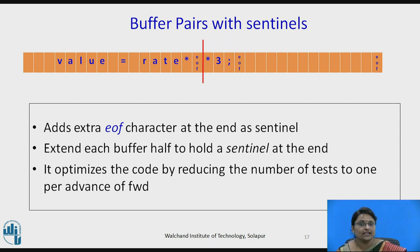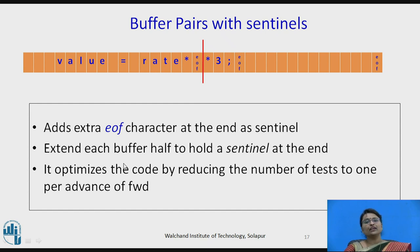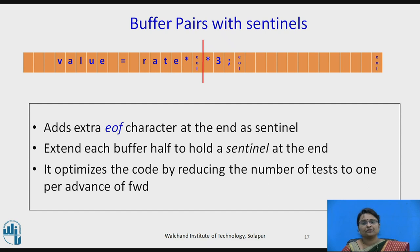The solution is to add end-of-file markers at the end of each buffer half — these are called sentinels. So there is an EOF at the end of the first half, an EOF at the end of the second half, and an EOF at the actual end of the statement — three EOF markers in total. Sentinels extend each buffer half at the end, which optimizes the code by reducing the number of tests needed for every forward pointer increment.